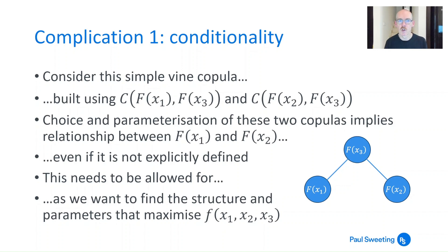So the first complication is conditionality. Consider this simple vine copula linking variables 1, 2 and 3 with 3 in the middle. It's built using c(F(x₁), F(x₃)) and c(F(x₂), F(x₃)). In other words you're defining the copulas joining x₁ and x₃ and you're defining the copulas joining x₂ and x₃. And these two copulas are your main levers to describe the strength of relationships between those two pairs of variables and the shape of the relationship as well.